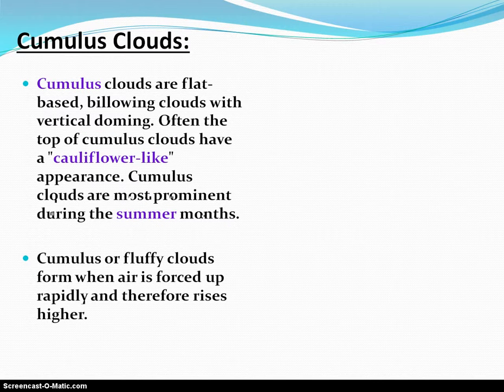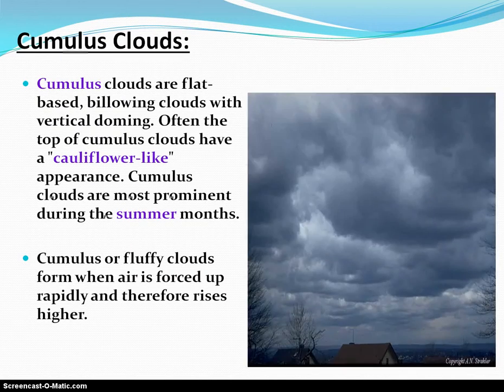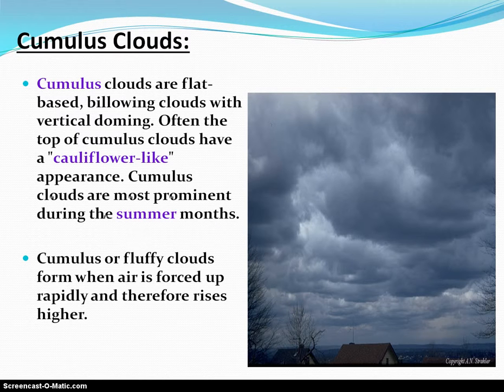Our third type of cloud based on form is the cumulus cloud. We've had stratus and cirrus, and now cumulus clouds — which are, in essence, like cotton balls in the sky. Depending on where they're located — higher up, mid-level, or closer to the ground — they might have different appearances. But here's a picture showing an example of one closer to the ground, where you can definitely see that cotton ball, fluffy form they carry with them.